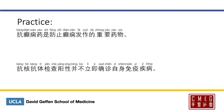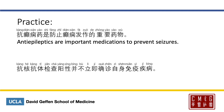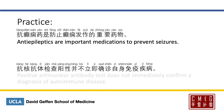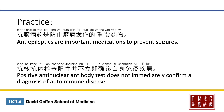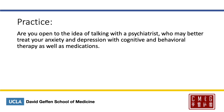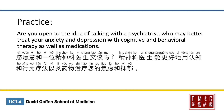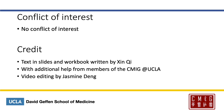Here's some practice. 抗癫痫药是防止癫痫发作的重要药物。Anti-epileptics are important medications to prevent seizures. 抗核抗体检查阳性，并不立即确诊自身免疫疾病。Positive anti-nuclear antibody test does not immediately confirm a diagnosis of autoimmune disease. Are you open to the idea of talking with a psychiatrist, who may better treat your anxiety and depression with cognitive and behavior therapy as well as medication? 您愿意和一位精神科医生交谈吗？精神科医生能更好地用认知和行为疗法，以及药物治疗您的焦虑和抑郁。